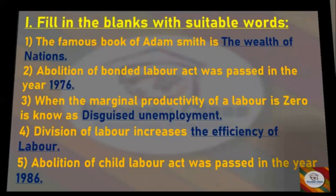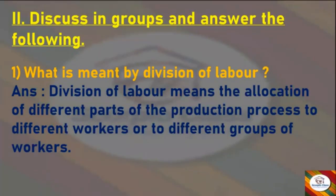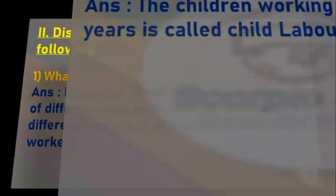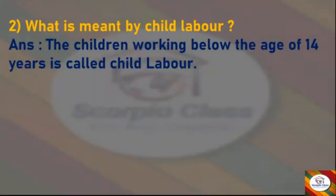Now we have Answer the Following. First one: what is meant by division of labor? Answer — division of labor means the allocation of different parts of the production process to different workers or to different groups of workers. Next — what is meant by child labor? Answer — the children working below the age of 14 years is called child labor.